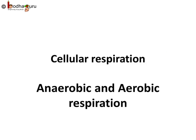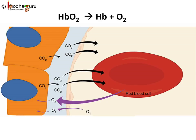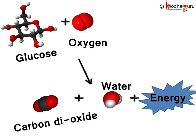Good morning everyone. In our previous lesson, we learnt how oxygen reaches the cell from the lungs. Here in the cell, it would be used to break down glucose and produce energy. But the reaction is not that simple as we speak.